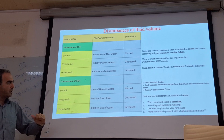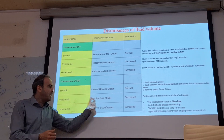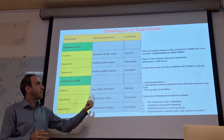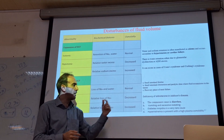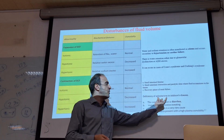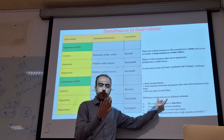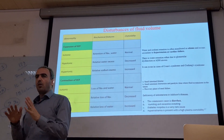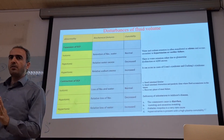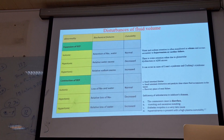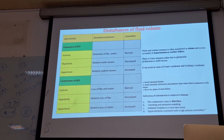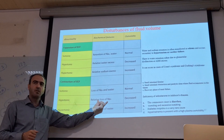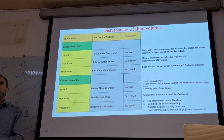Hypotonic contraction means we lose sodium more than water. Osmolality decreases. It can be due to dysfunction of aldosterone, as in Addison's disease. In Addison's disease, aldosterone doesn't work, so sodium cannot be reabsorbed and the amount of sodium lost is increased, and ECF volume also decreases.